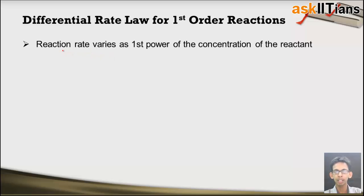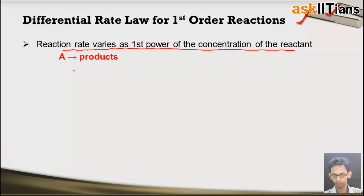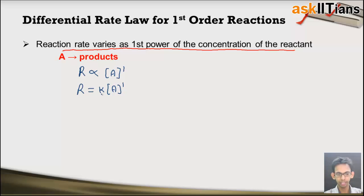For a first order reaction, the reaction rate varies as the first power of the concentration of the reactants. Let's understand this with a hypothetical example where reactant A reacts to form products. For it to be a first order reaction, the rate must be directly proportional to the first power of the reactant concentration. To eliminate the proportionality sign, we introduce a constant k, known as the rate constant.